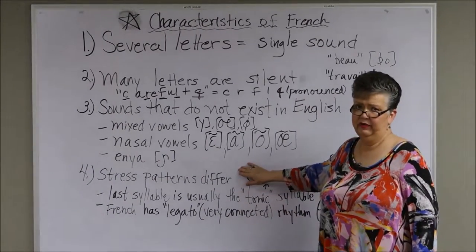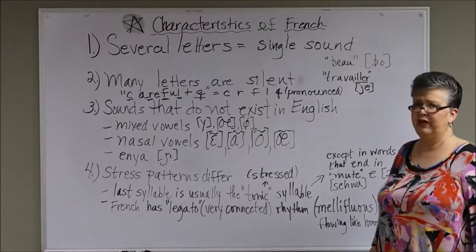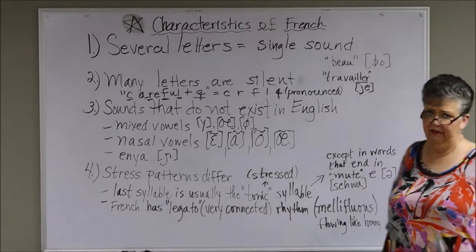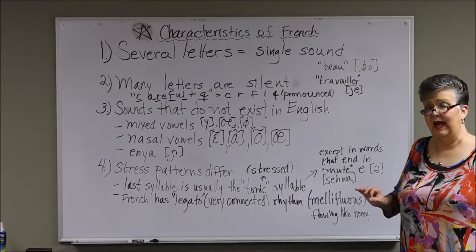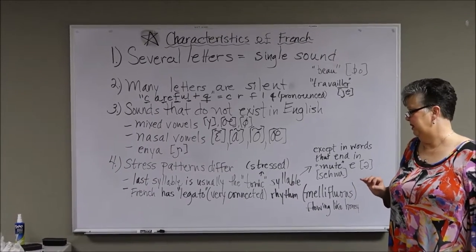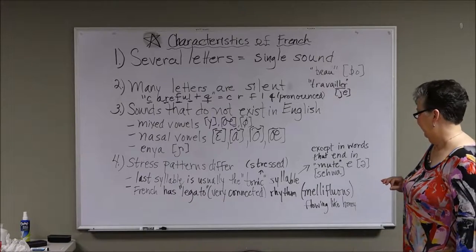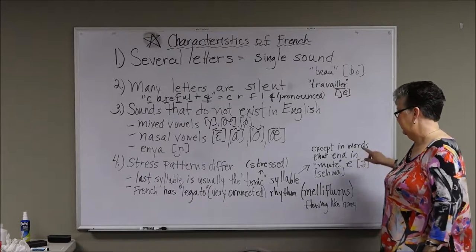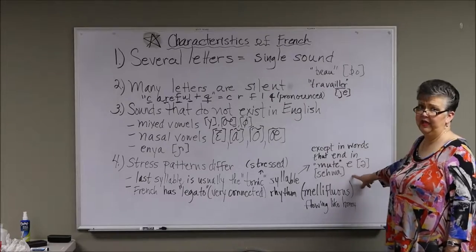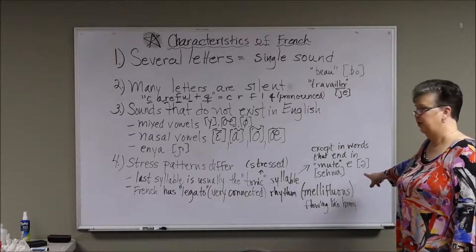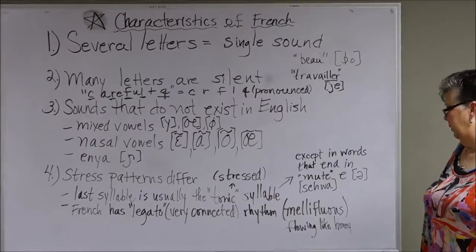The fourth major characteristic of the French language is that stress patterns are going to be different from many languages. Usually the last syllable is the syllable that is stressed — it's called the tonic syllable — except in words that end in the mute E, which is the schwa, the neutral sound.